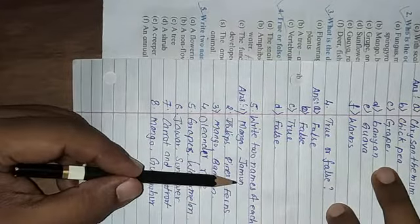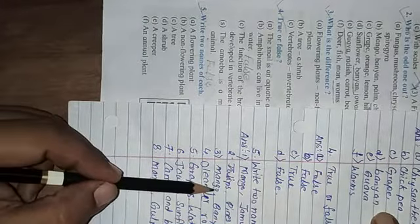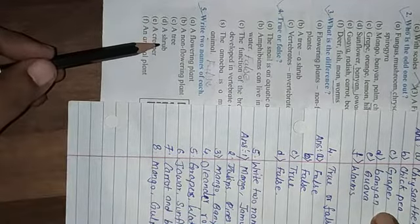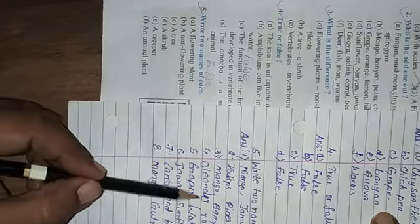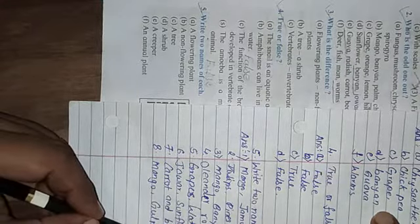Now see. Next one. First question. Question is that, write the name of two. First, flowering plant. Flowering plant means mango and jowar. Second, non-flowering plants: pines and ferns. A tree: mango and banyan. Shrub: oregano and rose. Creeper: grapes and watermelon.